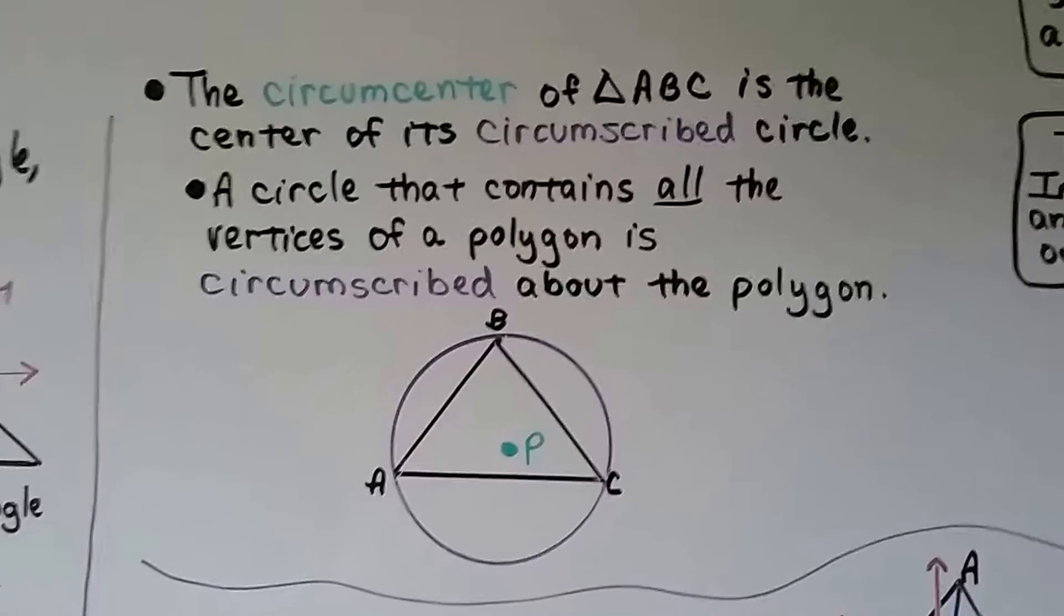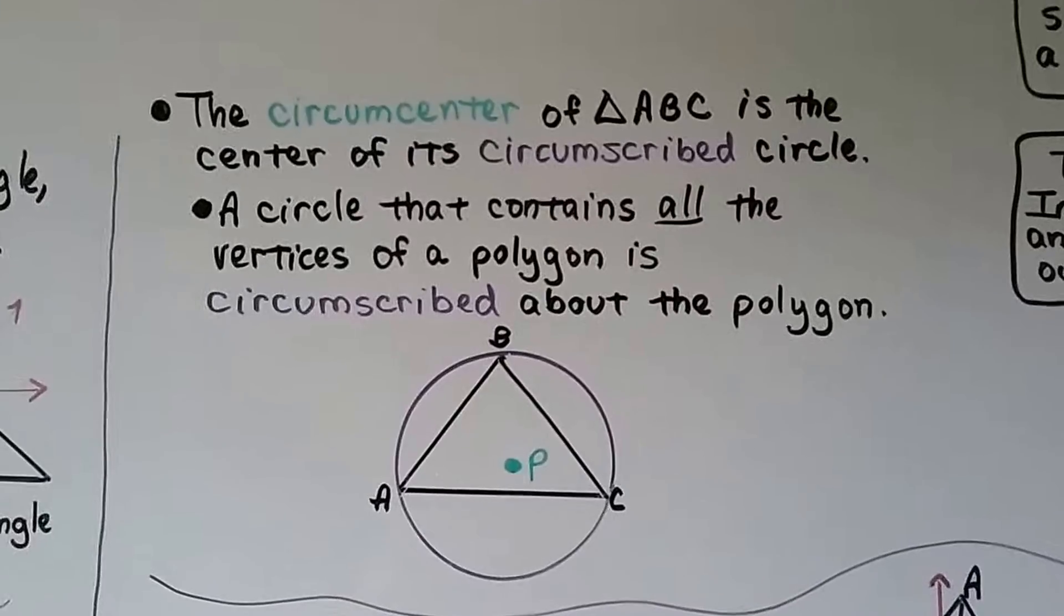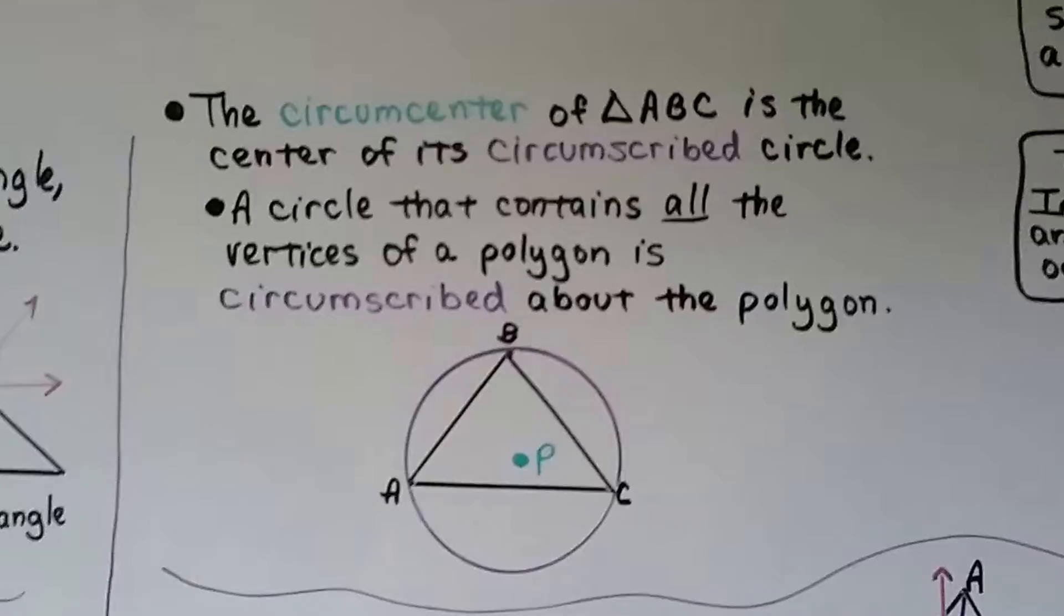It could be a square, a pentagon, hexagon, octagon, whatever, trapezoid. But all the vertices have to be inside the circle.